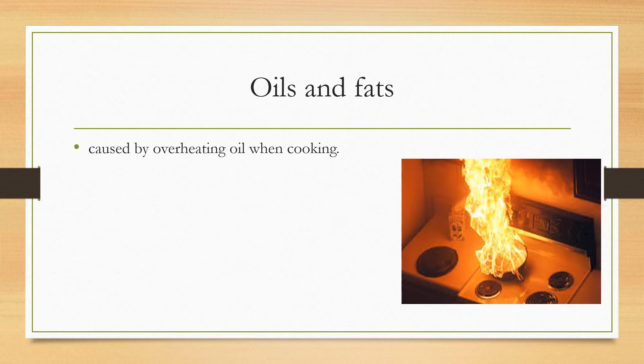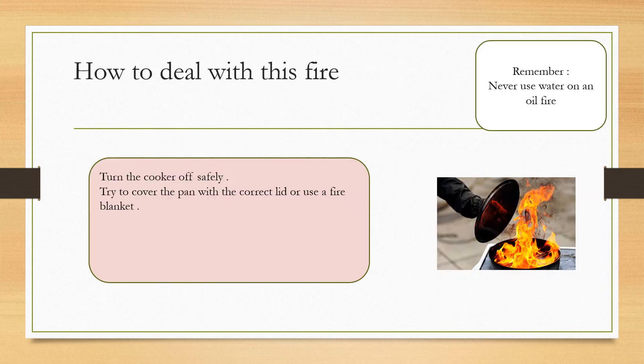The second type of fire can be caused by overheating oils and fats. When oil gets too hot, it can catch fire on its own without a spark. In case we have such a fire, if it's possible to turn the cooker off safely, then do so. Try to cover the pan with the correct lid or use a fire blanket. Do not move the pan as the contents could spill and burn you.